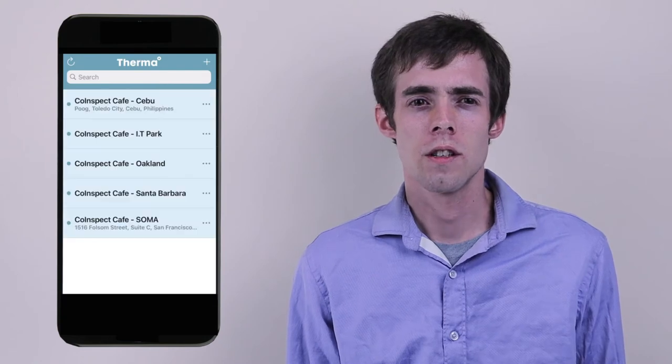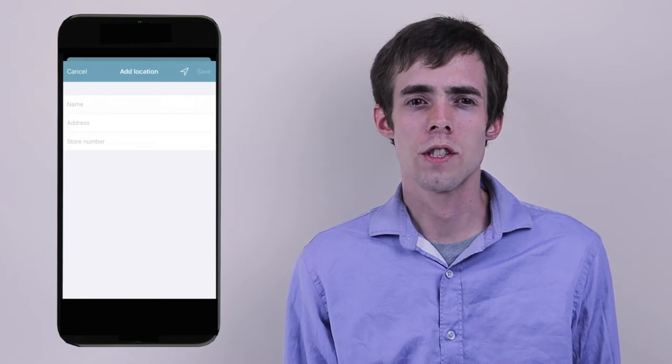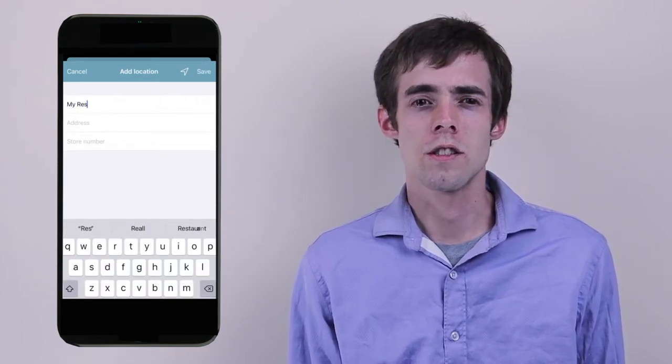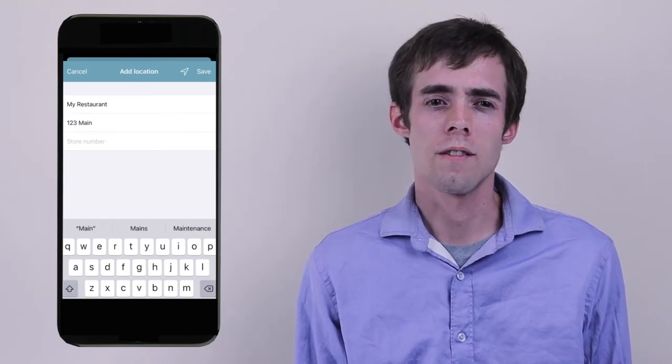After you've logged in, you might need to add a location. To do this, tap the plus icon in the top right corner of the screen and select add location. Enter the details for your location such as my restaurant, 123 Main Street, number 465, and tap save.